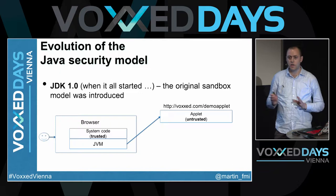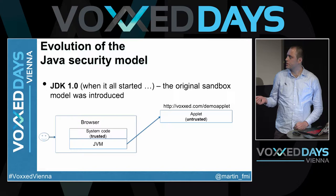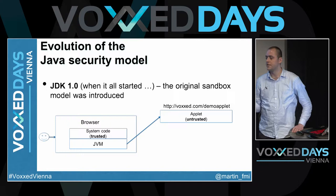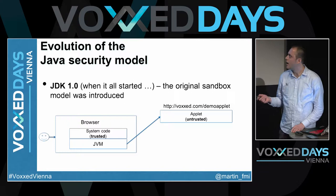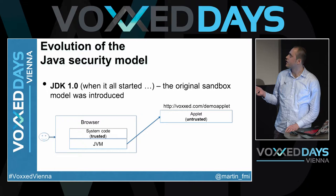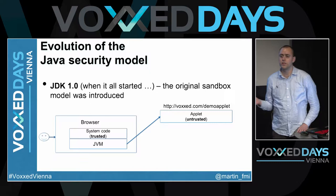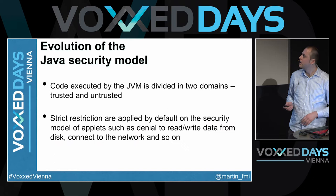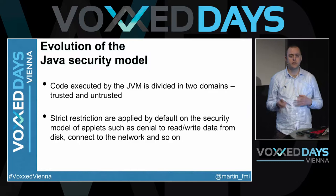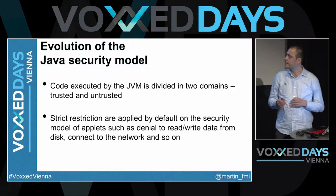In version 1.0, the model was pretty simple. We had the user's browser installed with some JVM. The system code that came from the JVM was deemed as trusted, meaning it could do whatever it wanted with the user's system — write to the file system, open a network socket, and so forth. On the other hand, applets loaded from the browser, such as one loaded from vox.com/demo-applet, were deemed as untrusted. The code in the JVM in version 1.0 was divided into two domains: a trusted and an untrusted one, with strict restrictions applied to the untrusted domain.